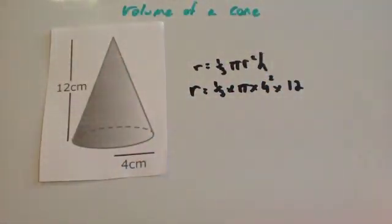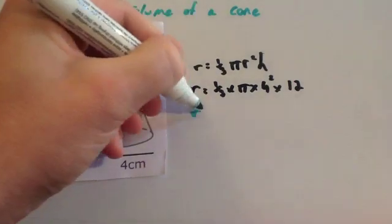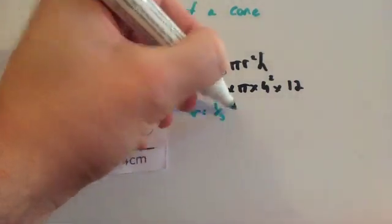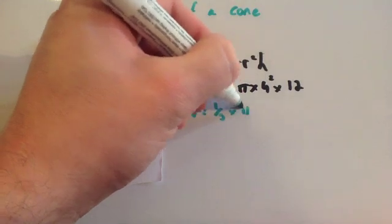You're going to write that out. So, you get 1 third times pi times 16 times 12.